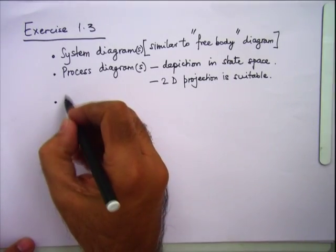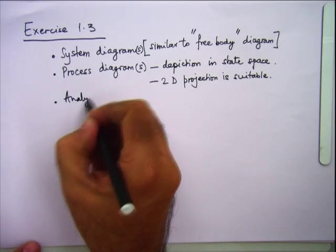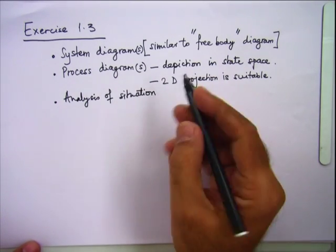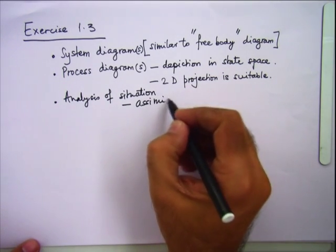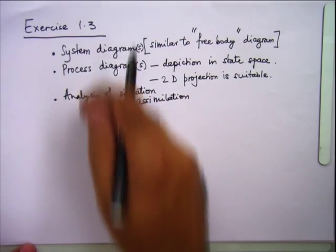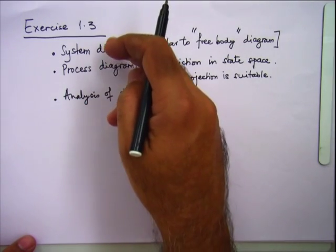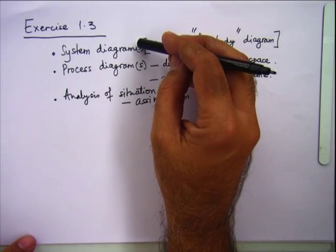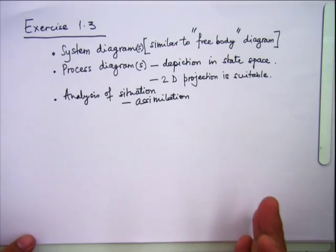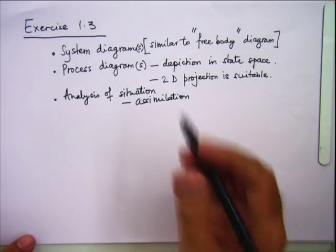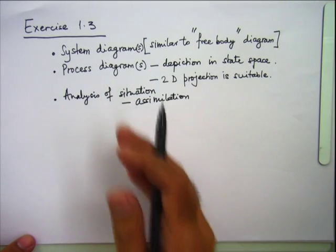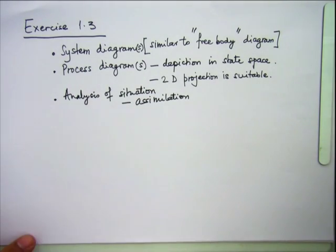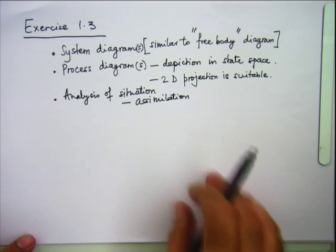Then we expect the student to do the analysis of the situation, which requires assimilation of the information. Although I am listing these steps one below the other, things need not proceed strictly in this fashion. Unless we assimilate and understand what it is, it may not be possible to sketch part of the system diagram. The process diagram can be completed only as the solution progresses. It is possible that your initial assumption was not right and the real process diagram should look different.